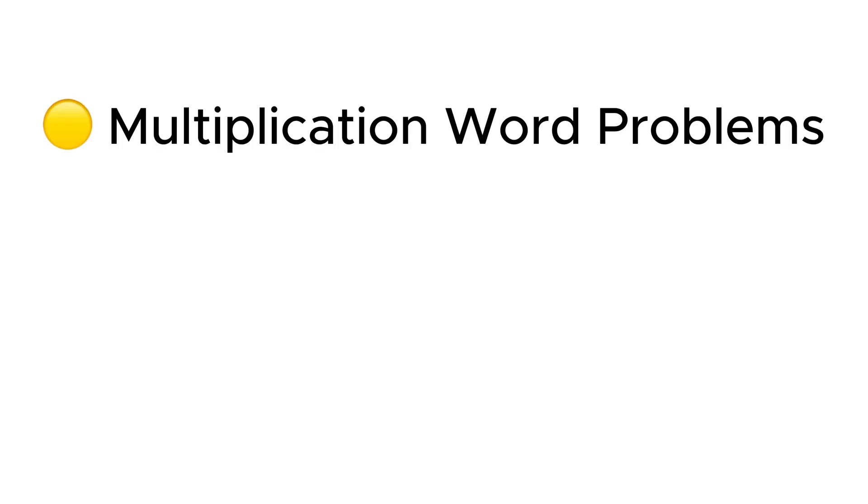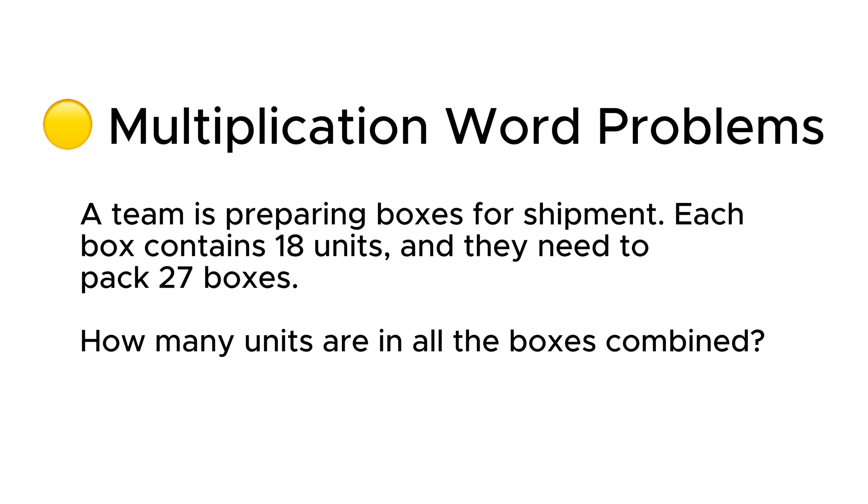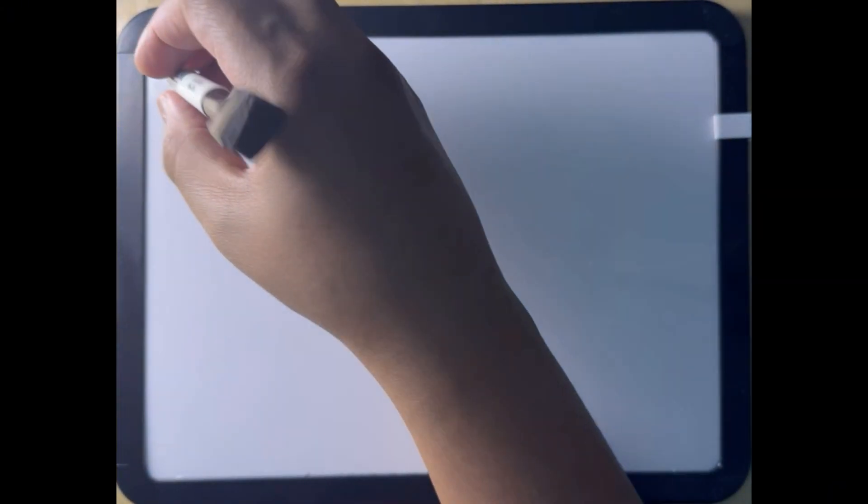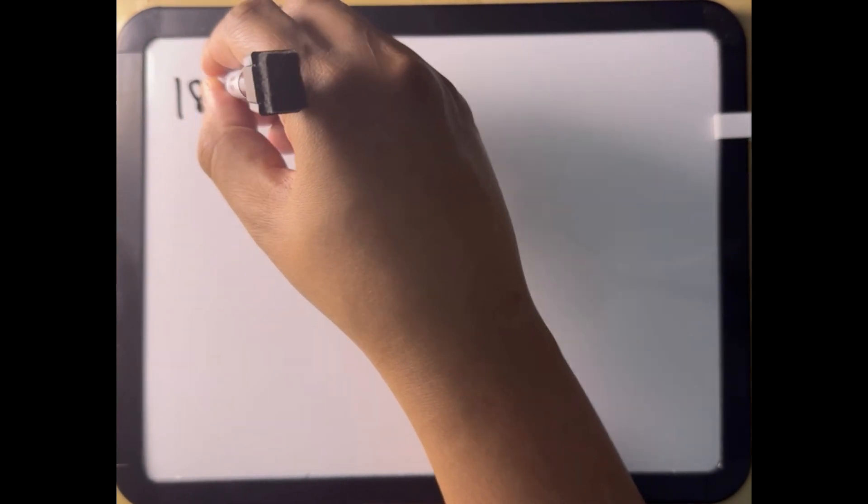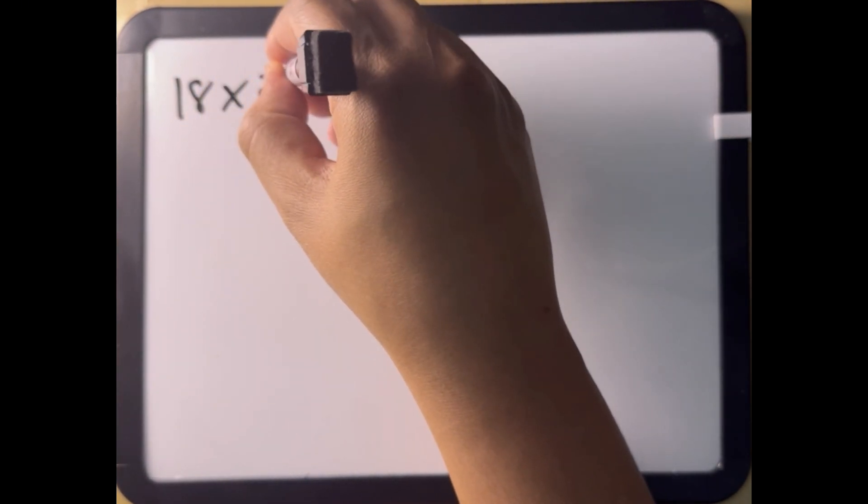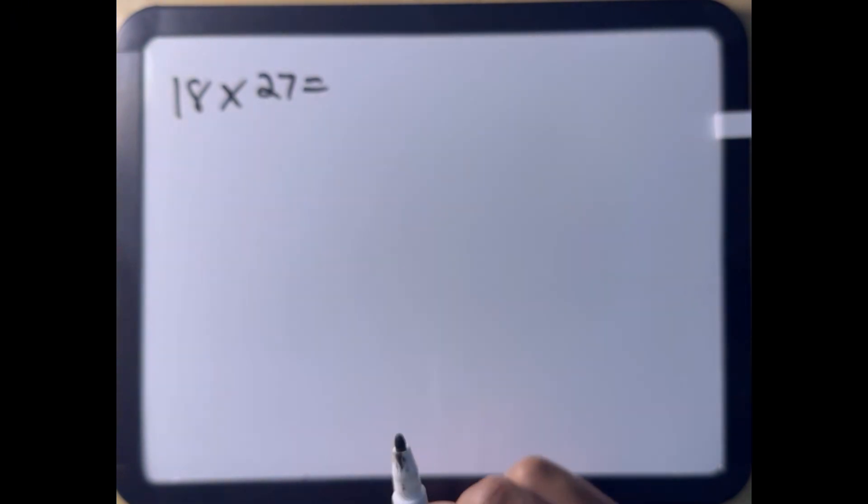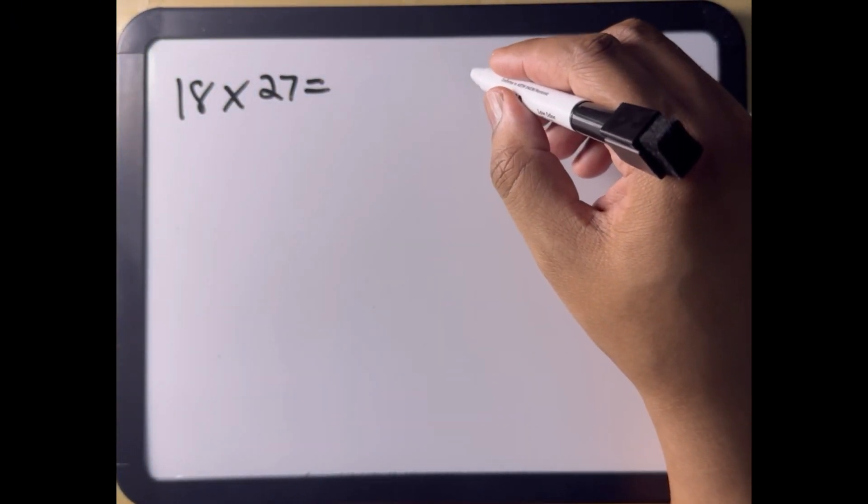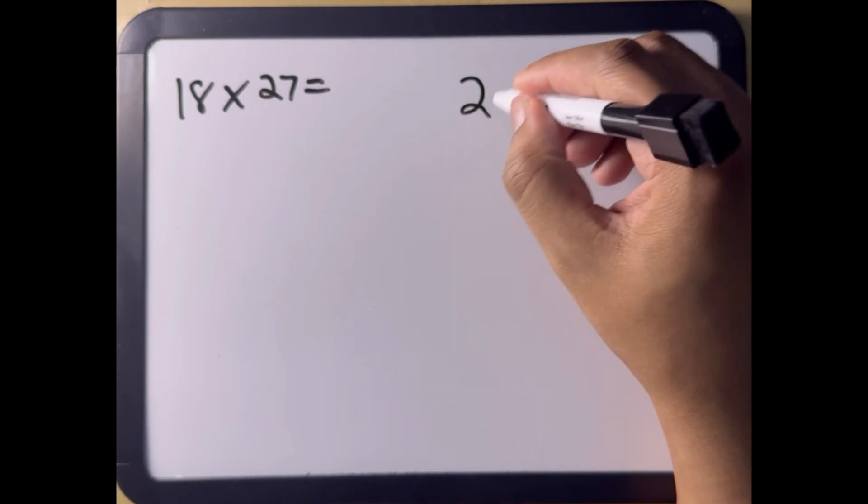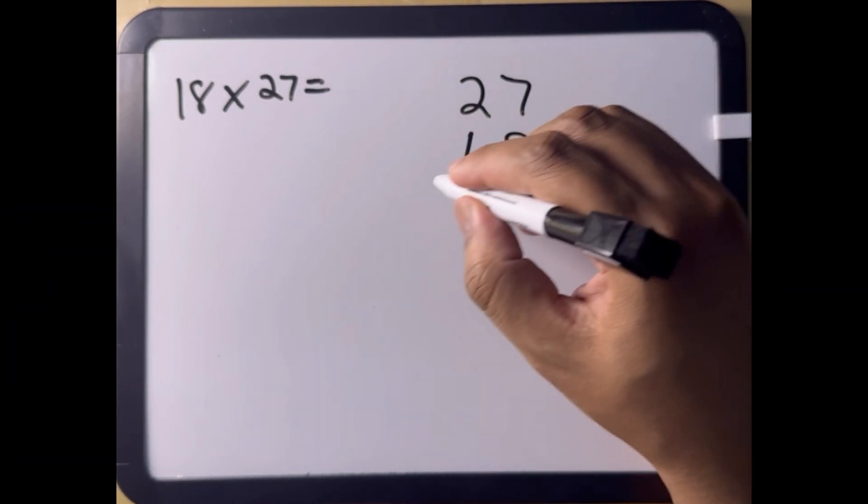Multiplication word problems. A team is preparing a box for shipment. Each box contains 18 units, and they need to pack 27 boxes. How many units are in all the boxes combined? Breaking down our word problem, we get 18 times 27 for our equation. We can write this out to solve this manually without a calculator as 27 times 18 vertically.